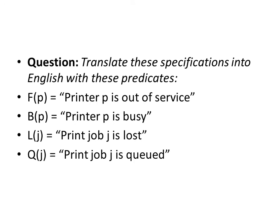Now let's go over a few examples of how to translate specifications into English with predicates. We have four specifications: F(P) means printer P is out of service; B(P) means printer P is busy; L(J) means print job J is lost; and Q(J) means print job J is queued.